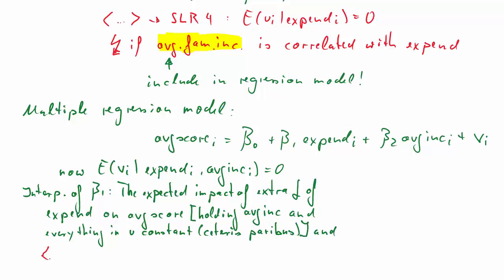And, and that is the second condition, as before, that all, that we have to assume that all our explanatory variables, that's expenditure and average income, are uncorrelated with the error term V and therefore the unobserved factors. So the Ceteris Paribus condition is important, and this now includes holding another explanatory variable constant, that was the average income here, and all the unobserved factors in the error term.